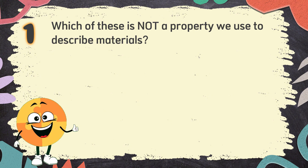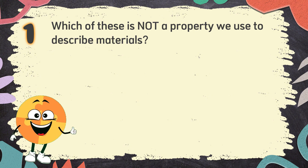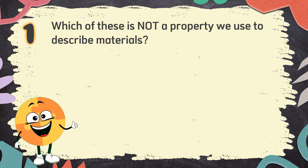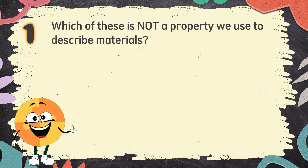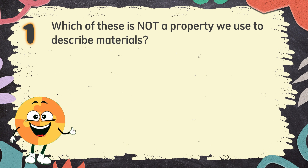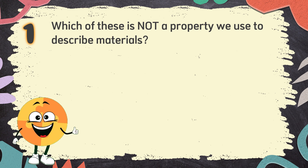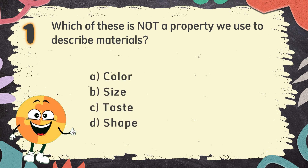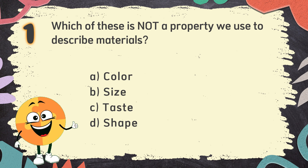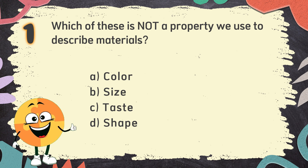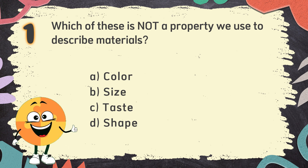Number 1. Which of these is not a property we use to describe materials? The choices are: A. Color, B. Size, C. Taste, D. Shape.